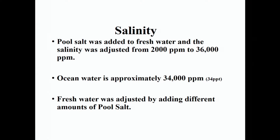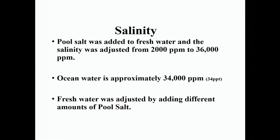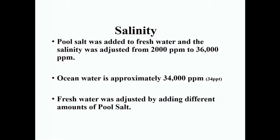For the salinity study, pool salt was added to fresh water and salinity was measured with a refractometer in parts per million. Ocean water is approximately 34,000 parts per million. We adjusted fresh water from 2,000 parts per million all the way up to 36,000 parts per million and tested these concentrations against the amoeba at different time periods.